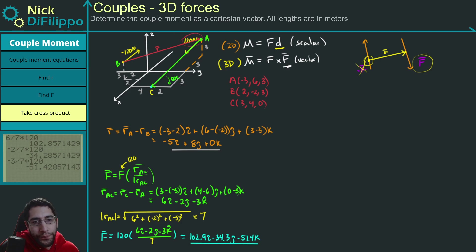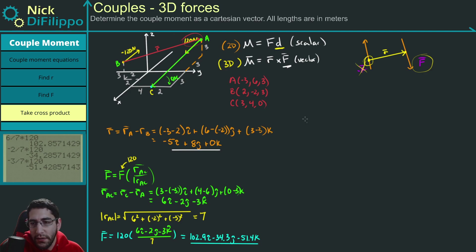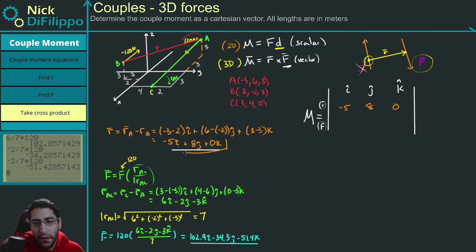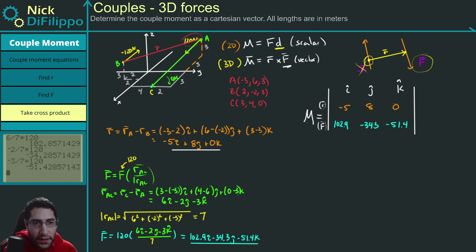To find the moment M = R × F, I set up the determinant matrix. The first row is i, j, k. The second row is my R vector: -5, 8, 0. The third row is my F vector: 102.9, -34.3, -51.4.